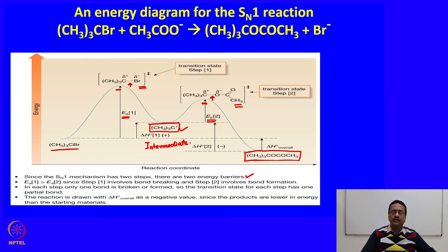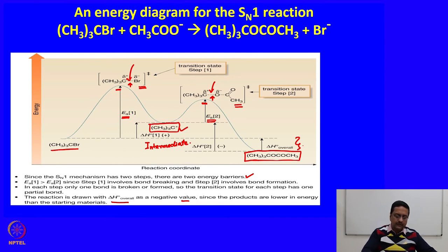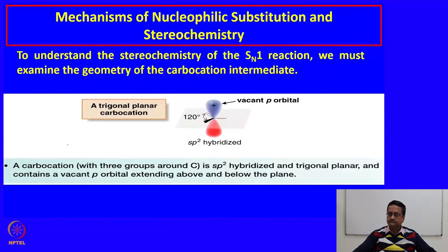The SN1 mechanism has two steps and two energy barriers. The first activation energy is always higher than the second because the carbocation is already energized. In each step only one bond is broken or formed, so the transition state for each step has one partial bond — unlike SN2, which has two partial bonds. The overall reaction has a negative ΔH₀, representing the energy difference between the starting alkyl halide and the final product.